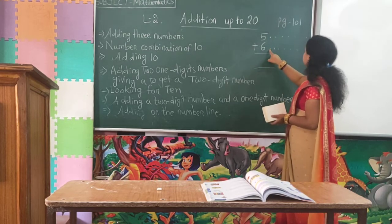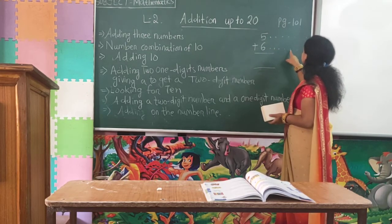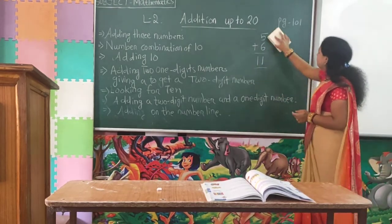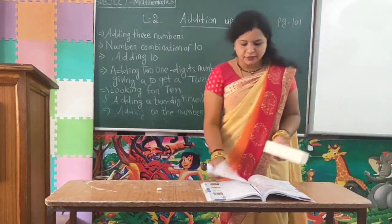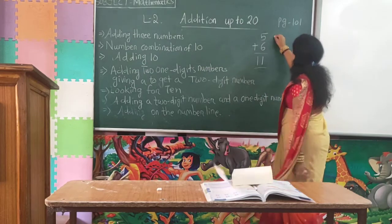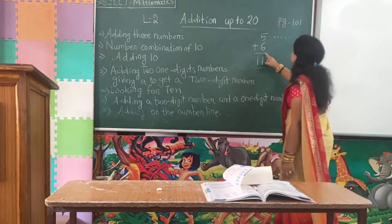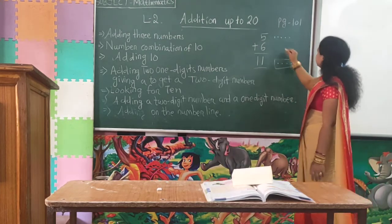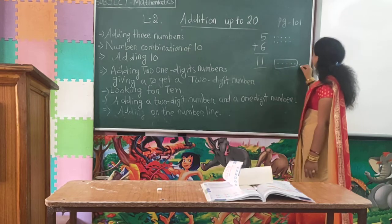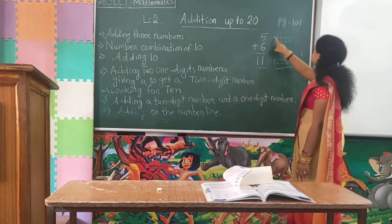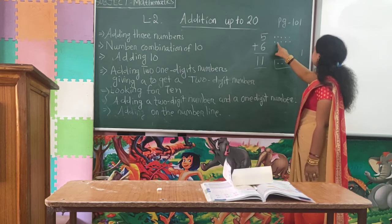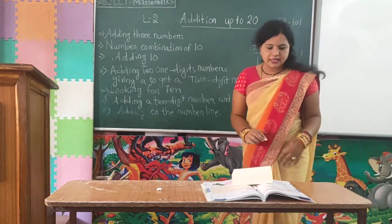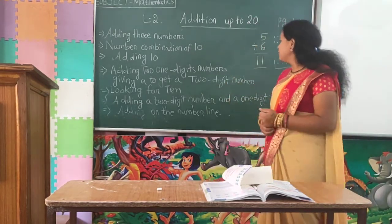Count all together: 1, 2, 3, 4, 5, 6, 7, 8, 9, 10, 11. So 5 plus 6 is equal to 11. You can also do this by making a group of 10 first. Take 5, then from 6 move 5 across to make 10 — only 1 remains. Count: 1, 2, 3, 4, 5, 6, 7, 8, 9, 10, and plus 1 is equal to 11. Like this you can add two 1-digit numbers.